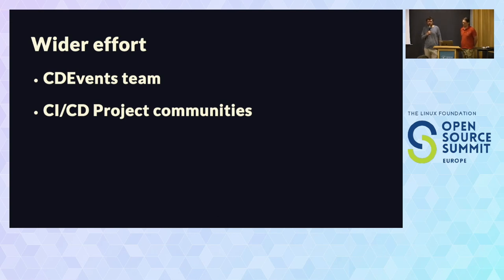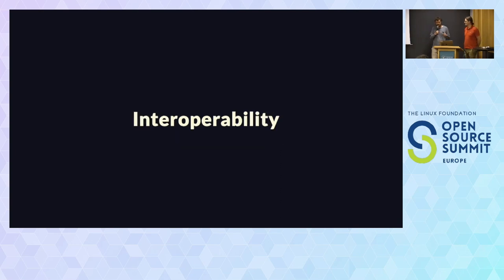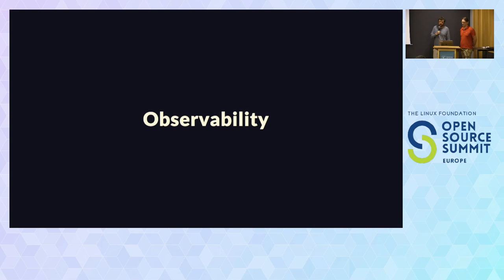Let's talk about what we want to achieve with CD Events. For this session, there are two goals I want to focus on. One is interoperability — making things work together by providing a common language, so switching out a tool should be easy because all tools speak the same language. The second, more relevant for this talk, is observability: providing directives on what to send and when to send, to tell the surrounding world what you're doing and achieving — and through this observability comes a great opportunity for building metrics.